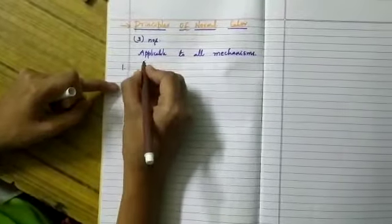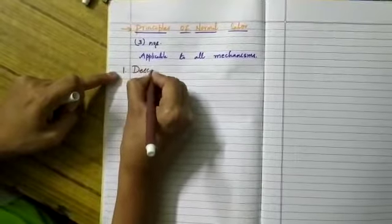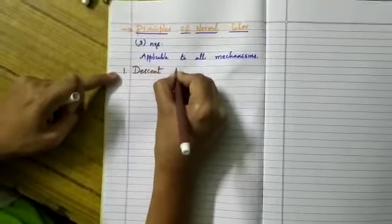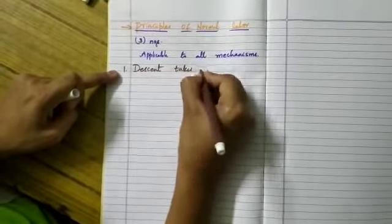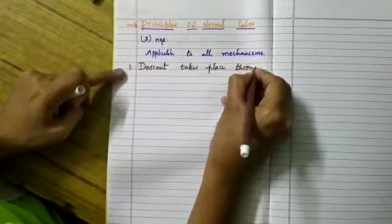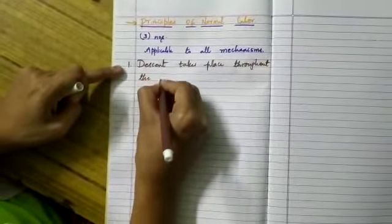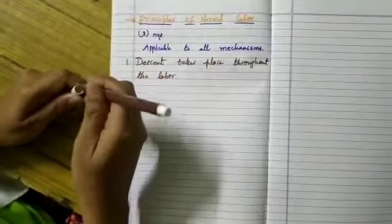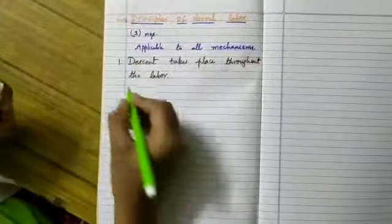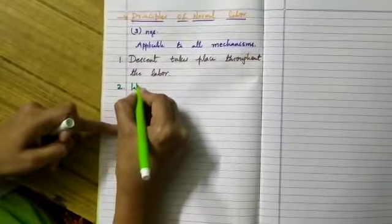Principle number one: descent takes place throughout the labour. So throughout the labour process friends, we have what is called as descent of the part which is presenting.